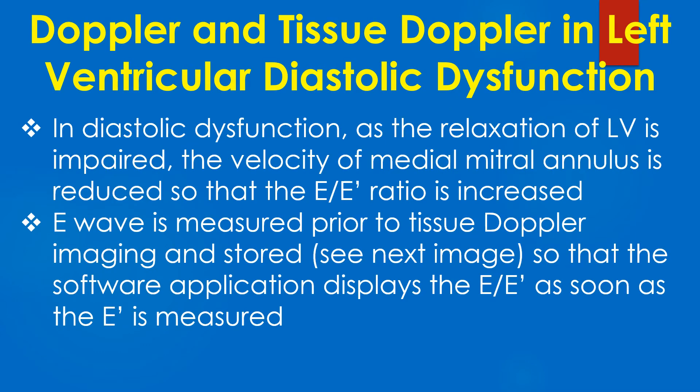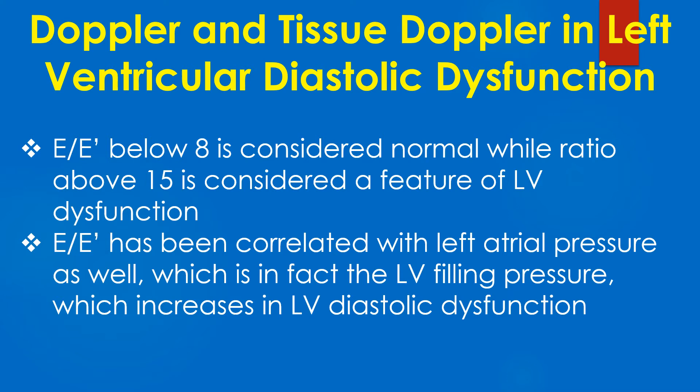In diastolic dysfunction, as the relaxation of the LV is impaired, the velocity of the medial mitral annulus is reduced so that the E by E prime ratio is increased. E wave is measured prior to tissue Doppler imaging and stored so that the software application displays the E by E prime as soon as the E prime is measured. E by E prime below 8 is considered normal, while a ratio above 15 is considered a feature of left ventricular diastolic dysfunction.